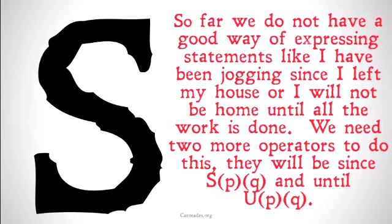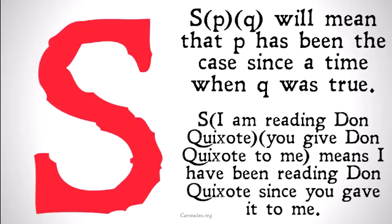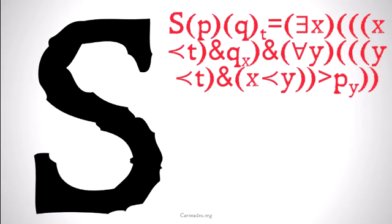They will be: since — SPQ — and until — UPQ. SPQ will mean that P has been the case since a time when Q was true. So for example, S(I am reading Don Quixote, you gave Don Quixote to me) means 'I have been reading Don Quixote since you gave it to me.' The structure is P since Q.